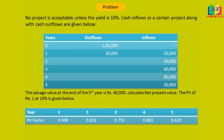No project is acceptable unless the yield is 10%. Cash inflows and outflows for a certain project are given. In this problem, the outflows are given for 2 periods — the current period (year 0) and after 1 year. The salvage value at the end of the 5th year is 40,000. Calculate net present value. The PV of rupee 1 at 10% is given below.